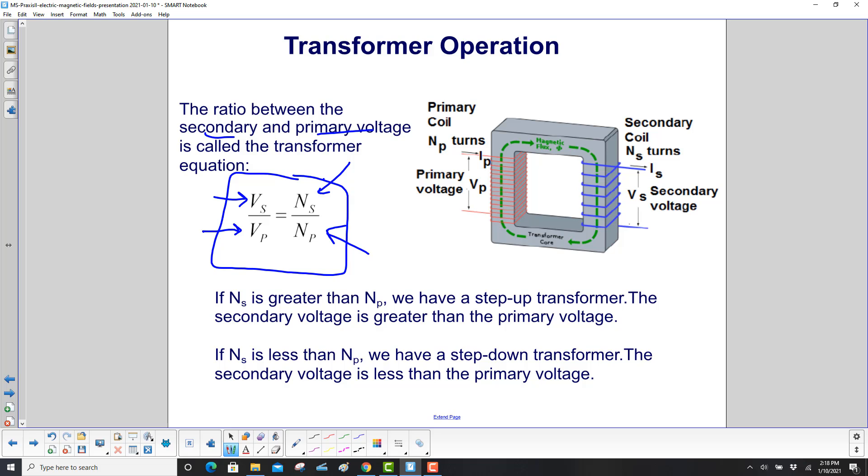If NS is greater than NP, we have a step-up transformer. The secondary voltage is greater than the primary voltage.